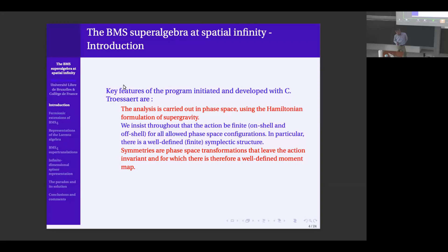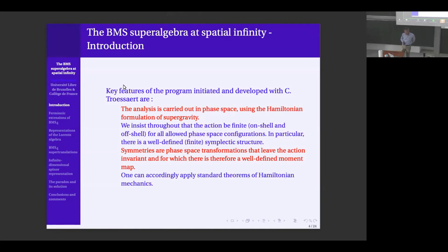Symmetries for us means asymptotic symmetries — gauge transformations that should preserve the boundary conditions, as I explained in my lectures. They should be actual phase space transformations mapping an allowed phase space configuration to another allowed one, with a well-defined canonical structure. Then there is a well-defined moment map, and you can associate a canonical generator to the transformation. You can apply standard theorems of Hamiltonian mechanics, compute brackets, and sometimes get realizations of symmetry with central charges or nonlinear terms, but this is under control through the Jacobi identity.